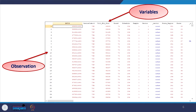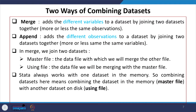There are two ways of combining datasets: merging and appending. In merging, you add different variables to the number of observations — adding more variables to a dataset by joining two datasets together, with more or less the same observations. In appending, you add observations to the dataset with the same variables. Usually you carry the same variables and add observations.